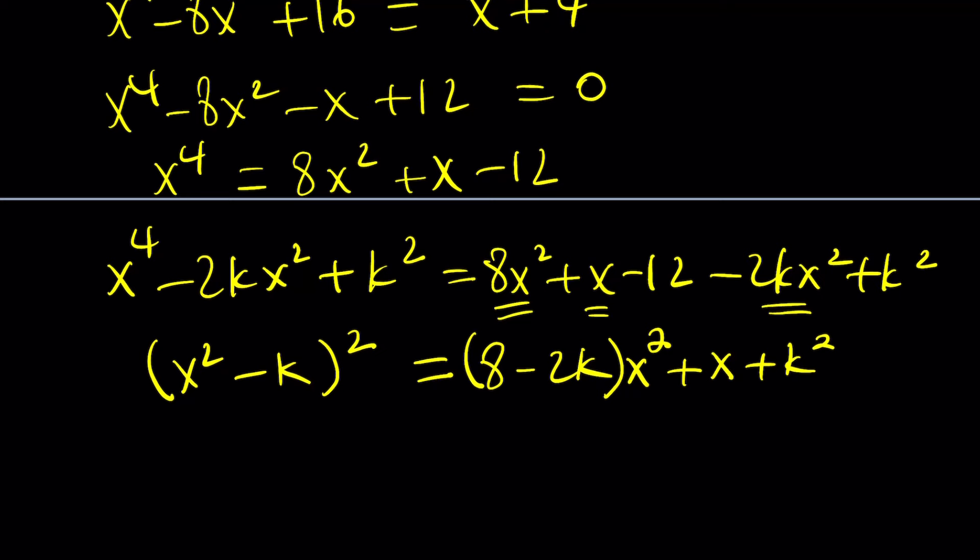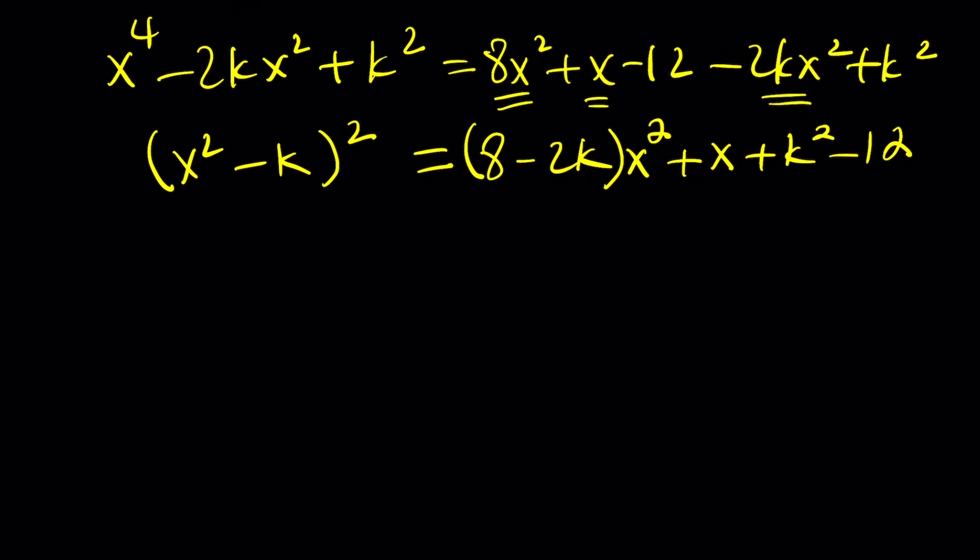That's going to be our constant. Now, since the left hand side is a perfect square, we also want the right hand side to be a perfect square. And to get a perfect square, I want the discriminant of the quadratic on the right hand side to be 0. In other words, I want delta to equal 0. Make sense? Because if delta equals 0, then we have a perfect square.